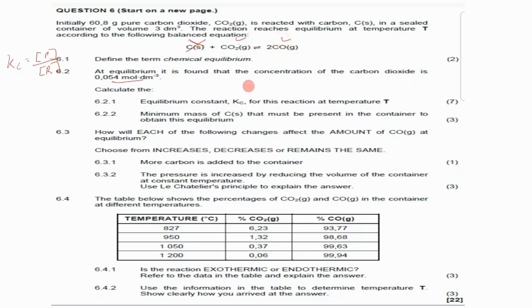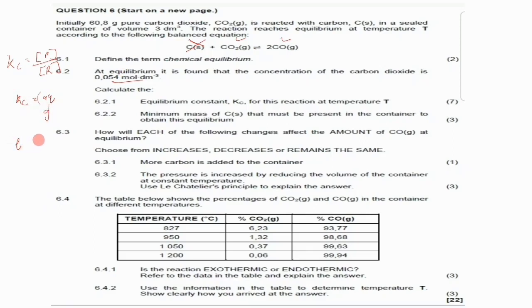The ones we'll be using are carbon dioxide and carbon monoxide. For Kc, we only use molecules that are in aqueous or gaseous state — those in liquid or solid state are not included.